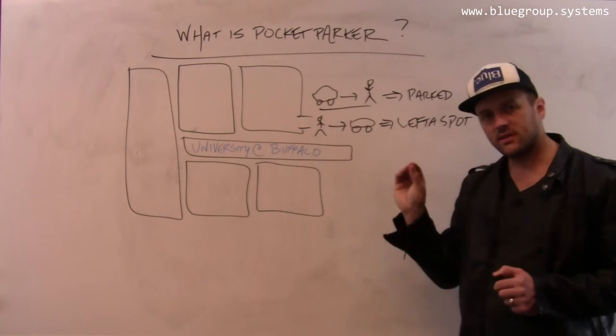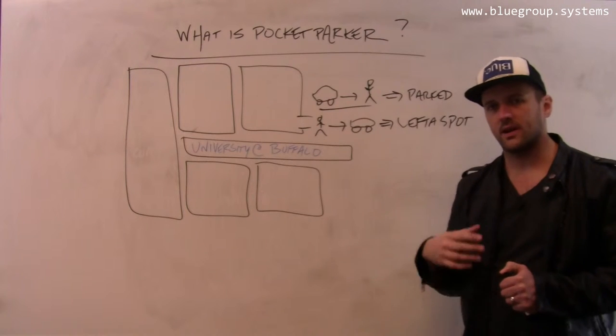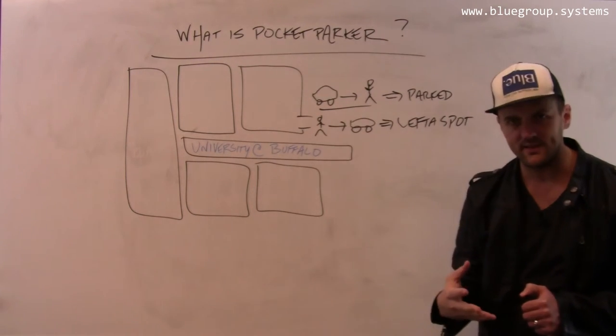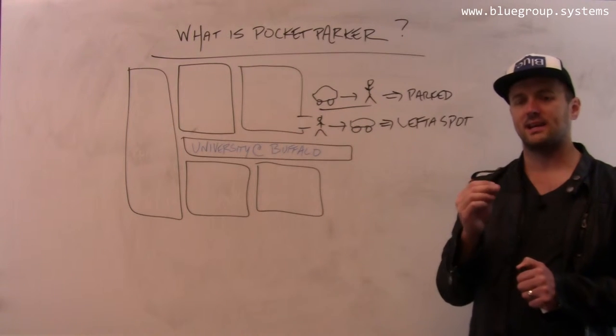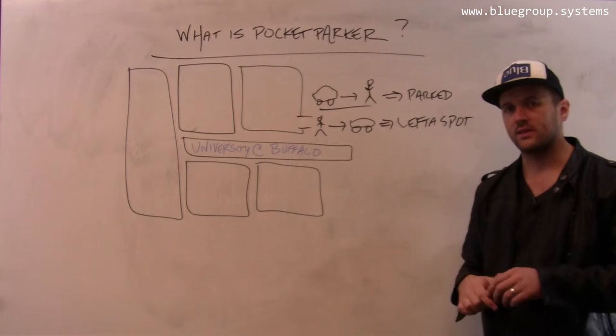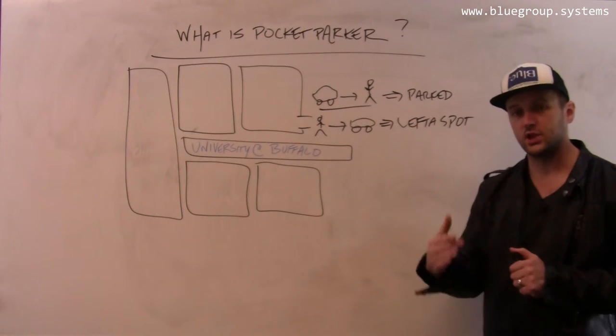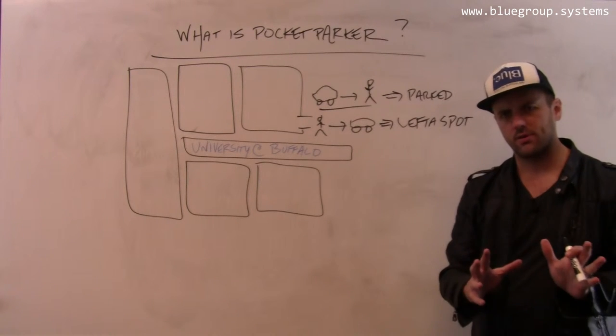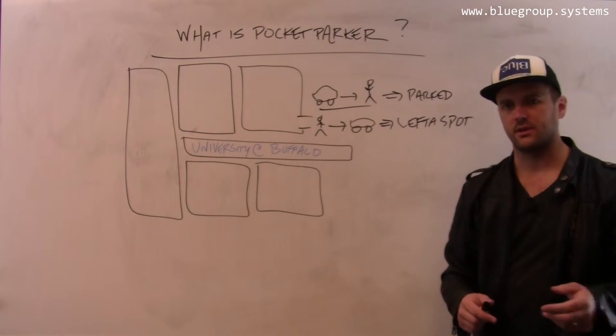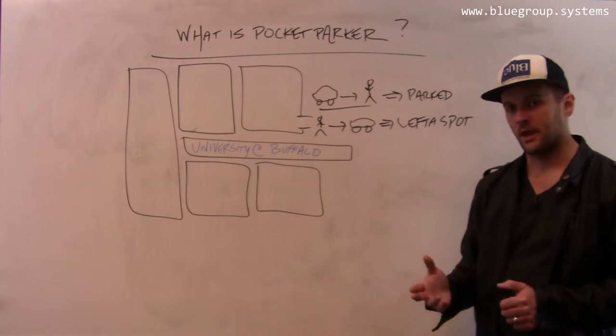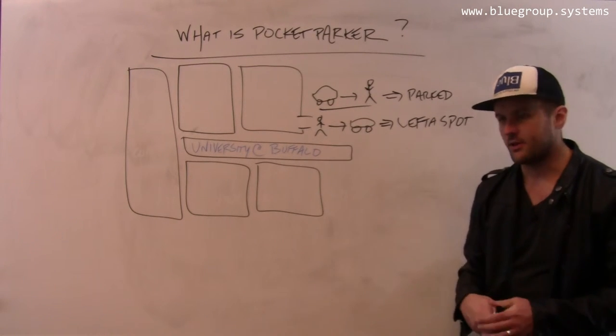Because it turns out that the accelerometers on modern smartphones are capable of detecting these types of activities and therefore are capable of detecting transitions between those activities. So PocketParker starts with leaving the accelerometer running and doing activity recognition. This is not something that we had to build. We built an earlier prototype, but eventually we just moved over to using the Google Play Services Library, which does this very accurately automatically.